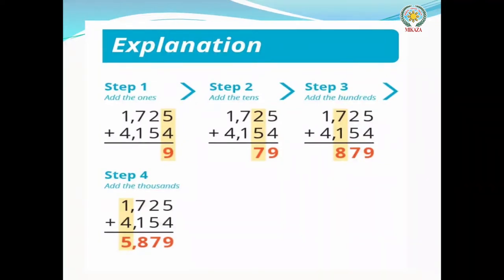Step number three: we add the hundreds place numbers. The hundreds digits are seven and one; seven plus one gives eight. Step number four: we add the thousands place numbers; four plus one gives five. So the answer to our question is five thousand eight hundred seventy-nine (5879).